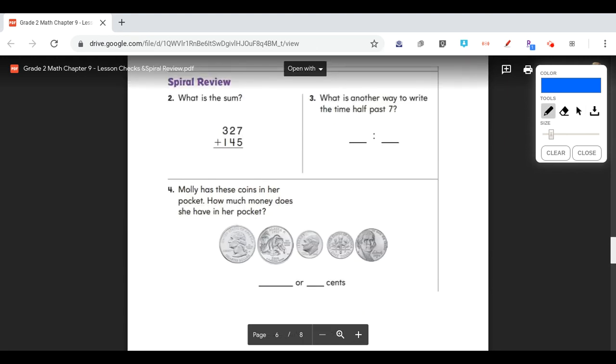For number one, it says, what is the sum? Sum means we're adding. So we're going to add 327 plus 145. We start with our ones place. We have 7 plus 5, and 7 plus 5 equals 12. So we put our 2 in our ones place, and we carry our 1 ten over to our tens column. Now we have 1 plus 2 plus 4 in our tens column. 1 plus 2 is 3, and 3 plus 4 is 7. So we have 7 tens. Then we add our hundreds. We have 3 plus 1, which equals 4. So our sum is 472.